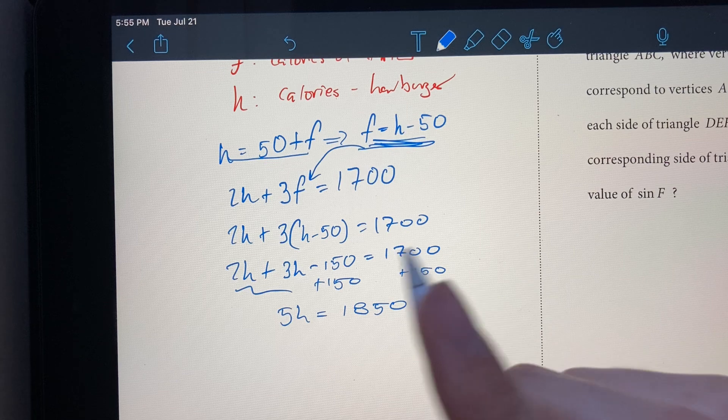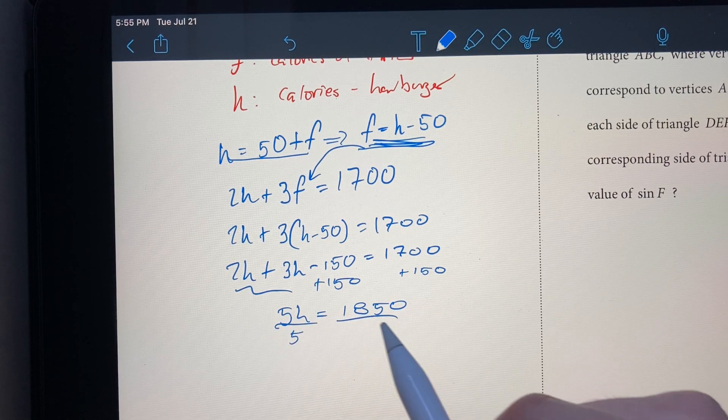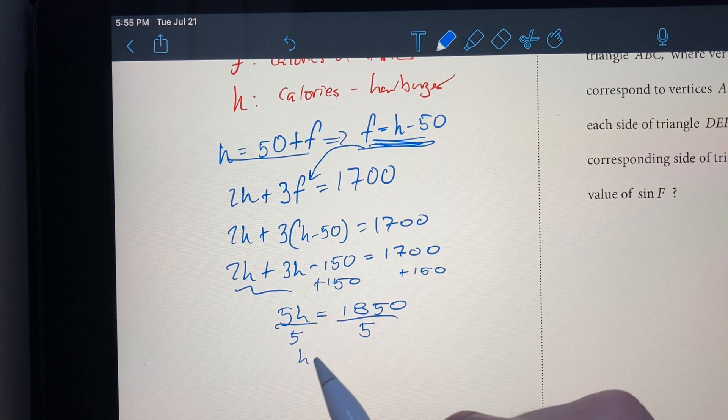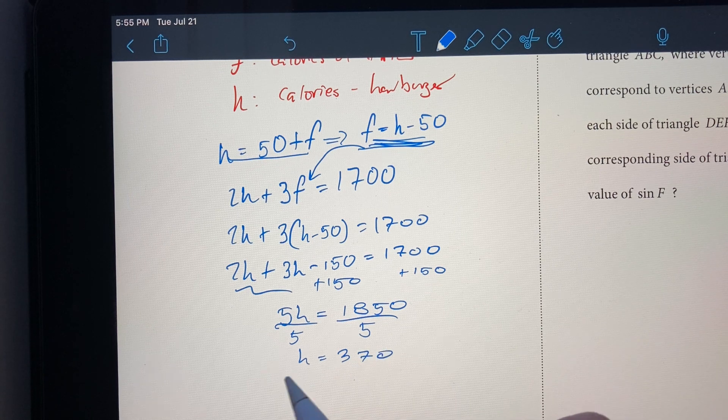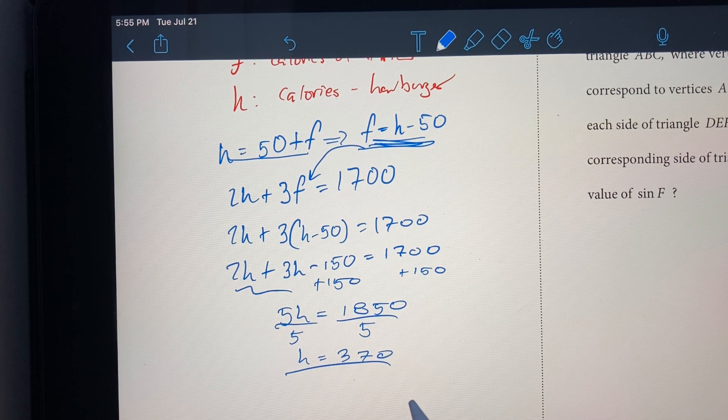And if you divide both sides by 5, we get that H is equal to 370. So now we know that each hamburger has 370 calories.